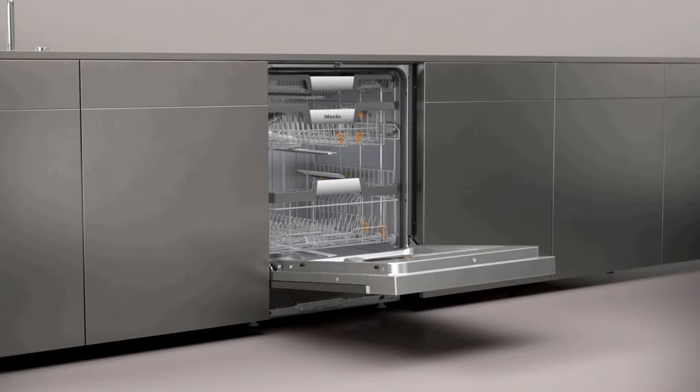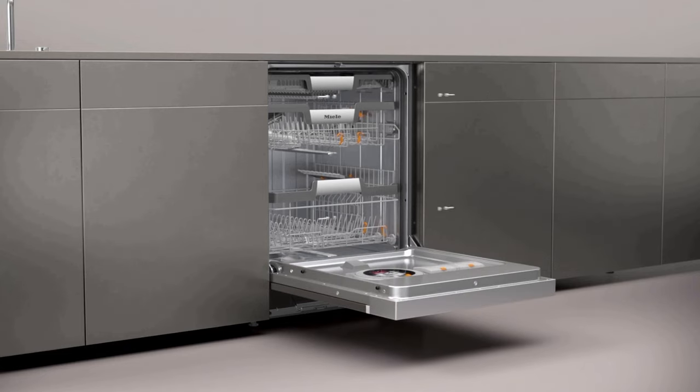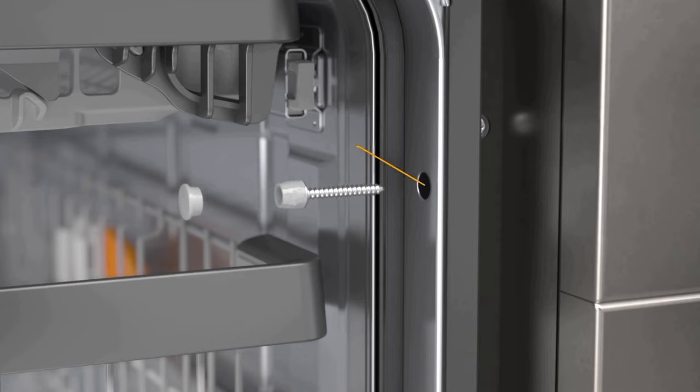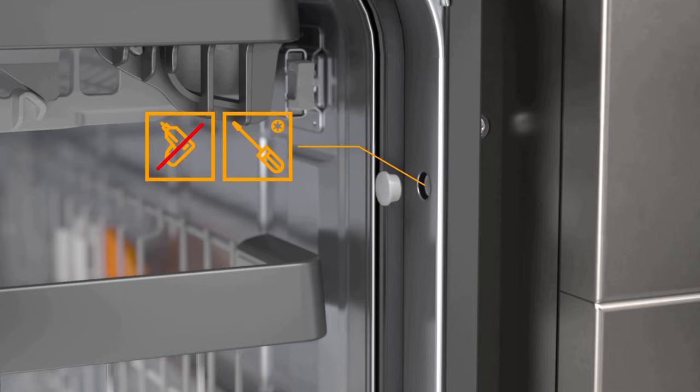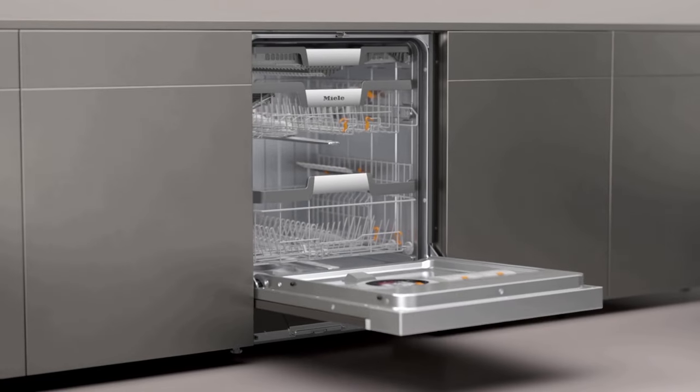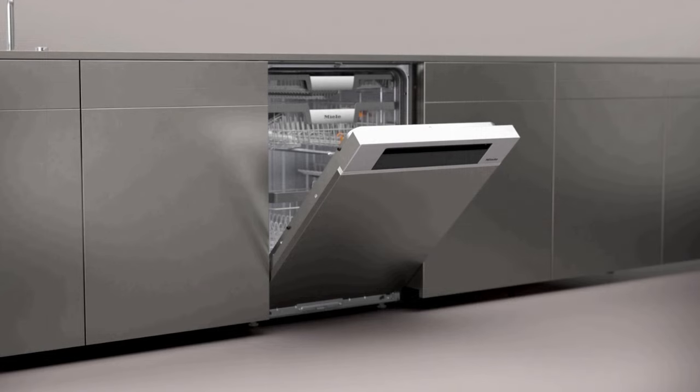Once the dishwasher is level, the door panel is installed and the dishwasher is flush with the adjacent cabinets, you can then fasten the dishwasher with the provided torx screws and then insert the plastic screw hole caps. Once the dishwasher is secured, you can then move on to the last step of adjusting the door tension.